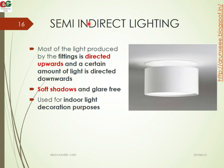In semi-indirect lighting, most of the light produced by the fittings is directed upwards, and a certain amount is directed downwards. This gives soft shadows and a glare-free type of lighting, mainly used for indoor lighting and decoration purposes.